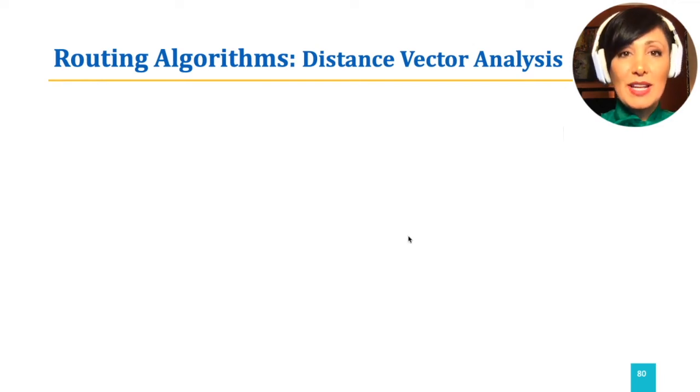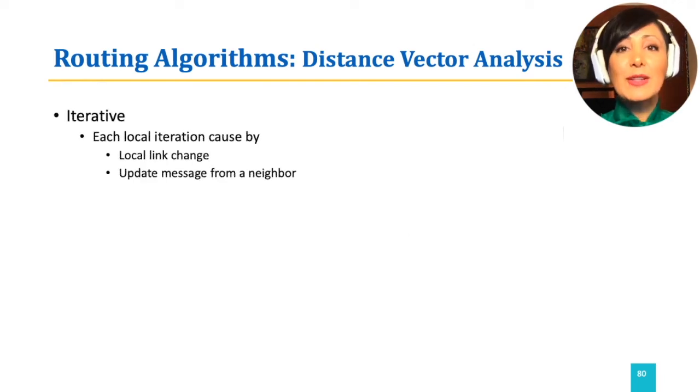The Bellman-Ford algorithm is an iterative algorithm. Each iteration at a node is caused by either a local link change or an update message from a neighbor. Iterations do not sync among the nodes, and therefore they can happen at different times on different nodes on the network.